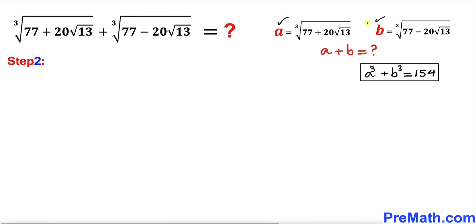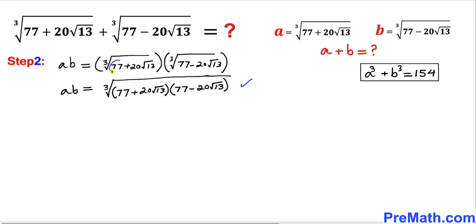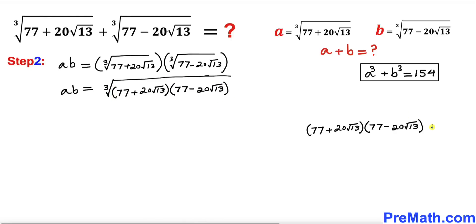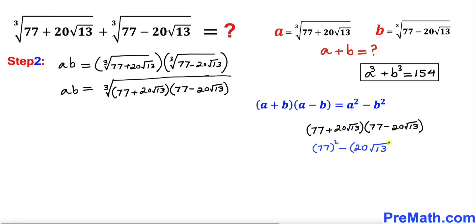Let's go ahead and multiply a and b. So a times b equals the cube root of 77 plus 20 times square root of 13, times the cube root of 77 minus 20 times square root of 13. We can combine these radicands under the same radical and multiply them out. Now let's recall the famous identity a plus b times a minus b. So this becomes 77 squared minus the square of 20 times square root of 13.